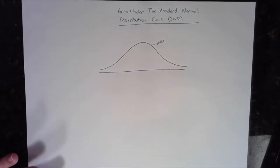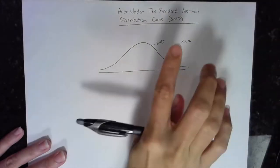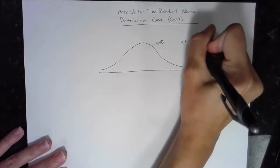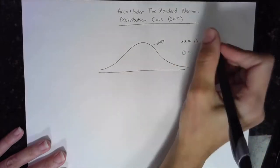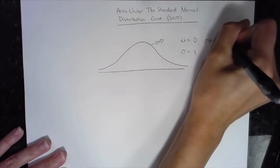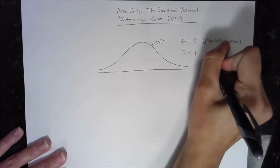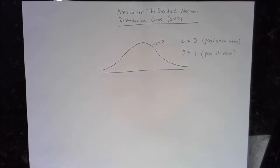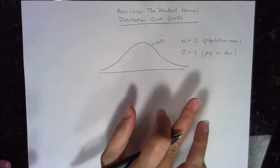You should remember about the standard normal distribution curve that the mean, which is represented by mu (the population mean), is zero. And sigma, our standard deviation, is equal to one. So this is our population mean and this is our population standard deviation. On an SND curve, the mean is always zero and the standard deviation is always equal to one.